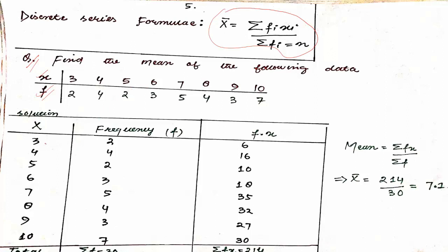So what do we do here? First of all, we multiply x and frequency. Because this is given in your question. After the multiplication, we write that under the head of f into x. So we are getting 6, and 4 fours are 16. Then 5 twos are 10, and so on.